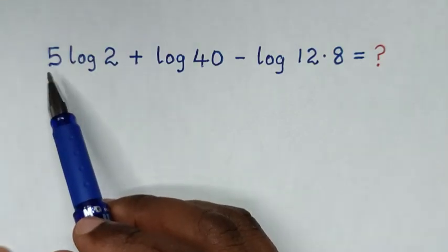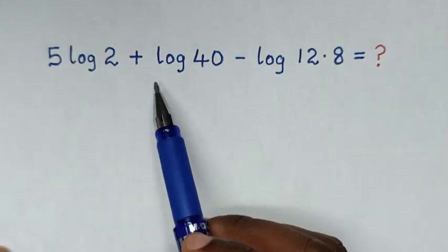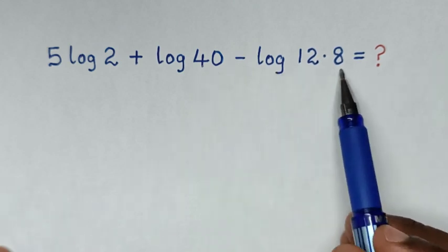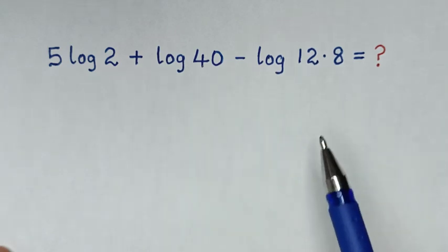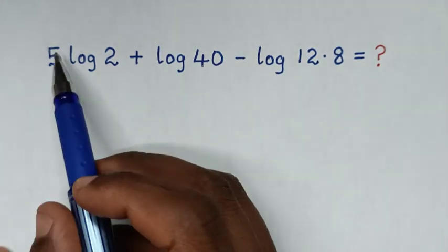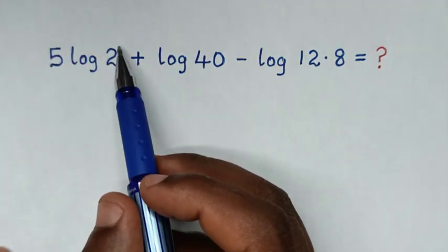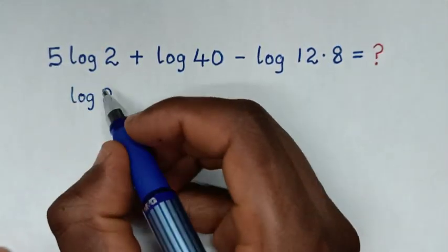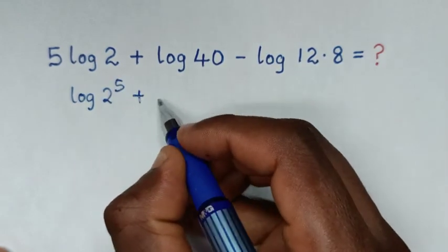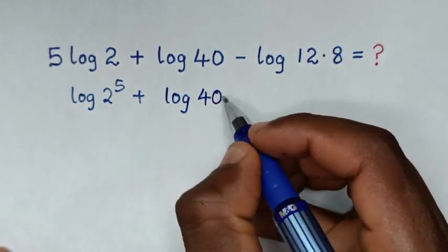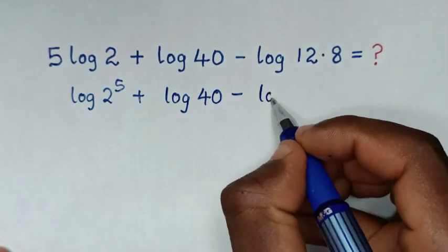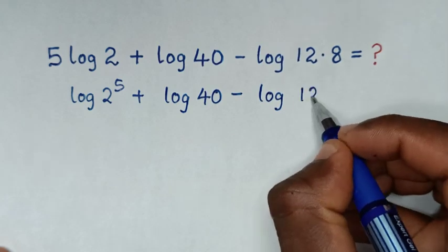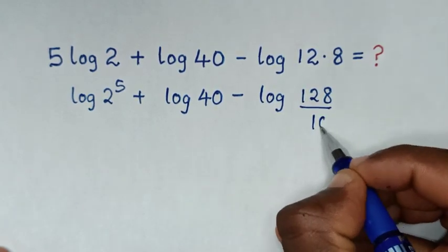How to solve 5 log of 2 plus log of 40 minus log of 12.8 without using a calculator? In the first step, we'll take this 5 into the power. So it will be log of 2 to the power of 5, then plus log of 40, then minus log of 12.8, which is the same as 128 over 10.